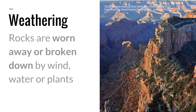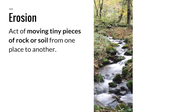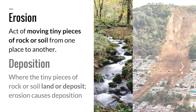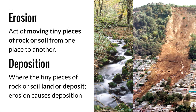Weathering is a process where rocks are worn away or broken down into smaller pieces by wind, water, or plants. Erosion is the act of moving tiny pieces of rock or soil from one place to another. Deposition is where the tiny pieces of rock or soil land or deposit.